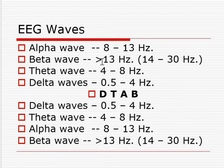How do we remember the frequencies numerically? The first one, delta, is 0.5 to 4 Hz. Next, theta is 4 to 8 Hz — just add another 4 Hz. Then alpha is 8 to 13 Hz — here you add 6 Hz more. By this pattern we can remember all four frequency ranges.